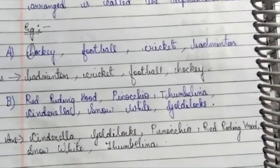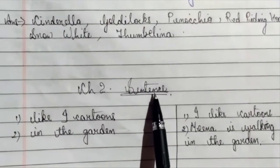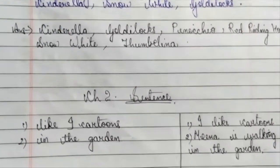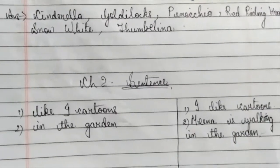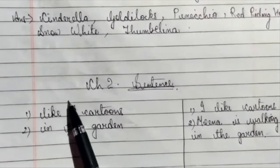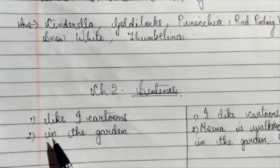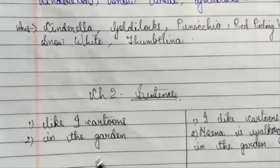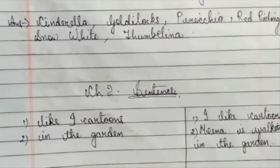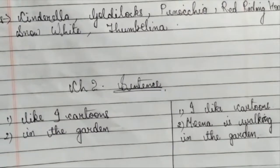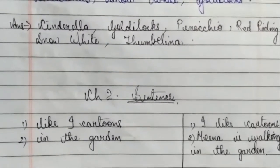Is it clear? So now we will move to our next chapter, that is Sentence. Look here, students — your second chapter is Sentence. I have written a few things. I'll go through it and make you understand what is a sentence. The first thing I have written is 'like I cartoons' and the second thing is 'in the garden.' So what do you think, students? Does 'like I cartoon' make sense? And 'in the garden' — what is in the garden? It doesn't give any true sense.